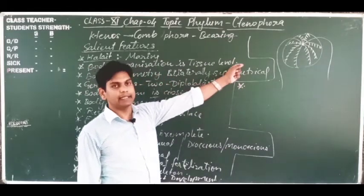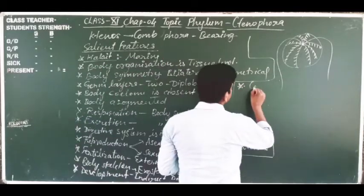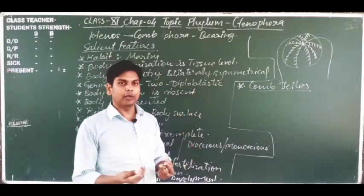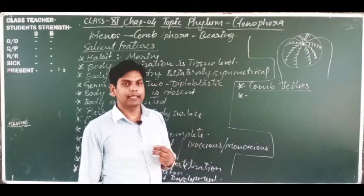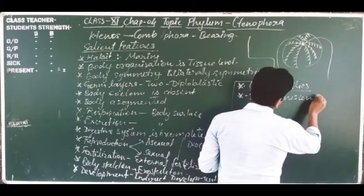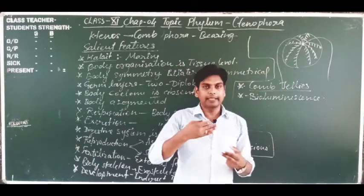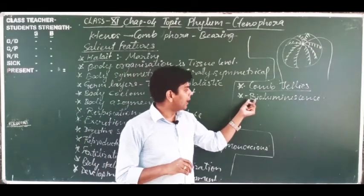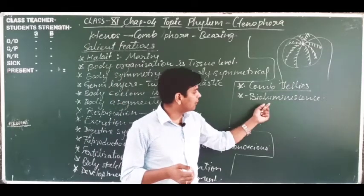One important point: because comb plates are present, these animals are also known as comb jellies — due to their jelly-like body and comb plates. These animals also perform bioluminescence. The comb plate teeth rotate and move, reflecting sunlight. They also contain bioluminescent chemicals that absorb light during the day and emit light at night, similar to a firefly.